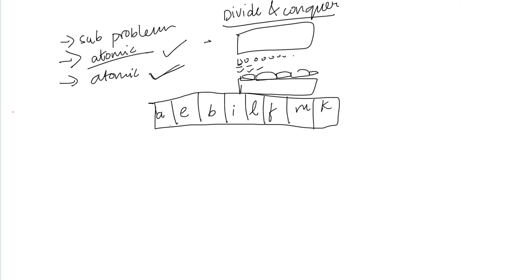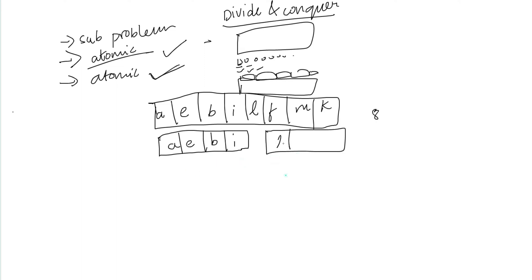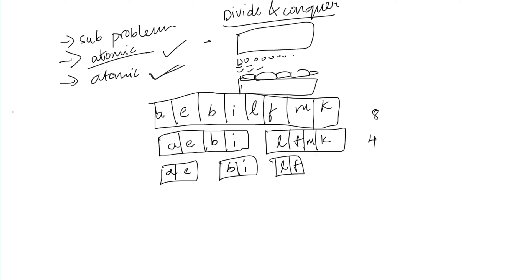So how do we do this? We start by dividing the 8 characters into smaller sub-problems. We split the 8 characters into two groups of 4: A, E, B, I and L, F, M, K. Then we subdivide each group of 4 into sub-problems of 2 characters.